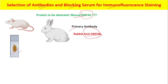What should be the source of the primary antibody? The source of the primary antibody should ideally be any animal other than the animal from where the section was taken. Here in our example, the section was from mice. Therefore, the source of primary antibody should not be from mice, but it can be from any other animal, such as rabbit. Therefore, the primary antibody we have used here is rabbit anti-HNF4-alpha.